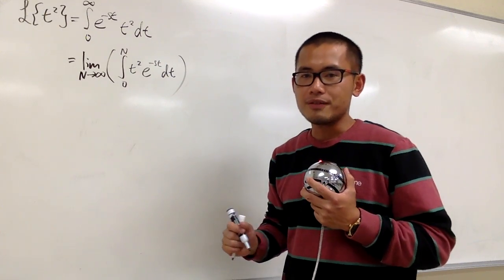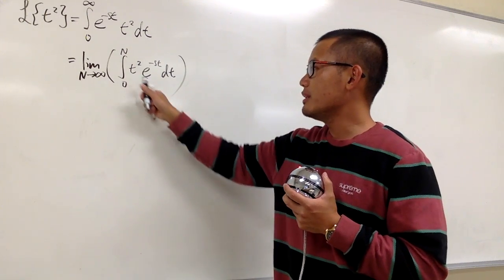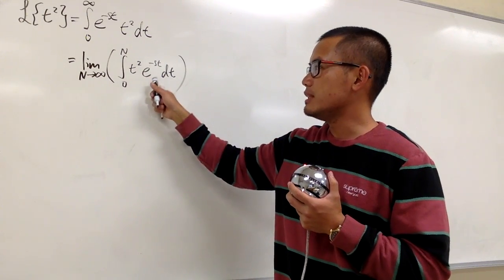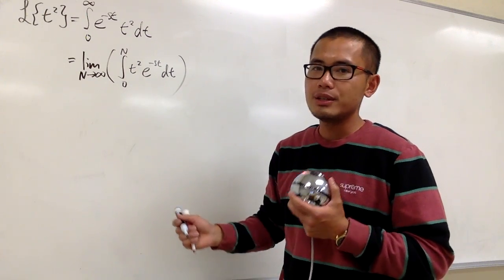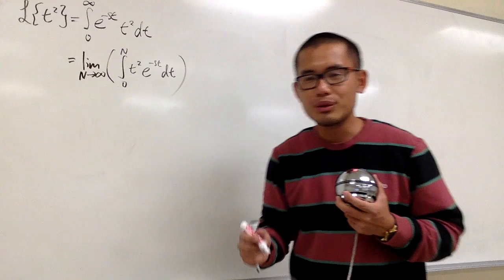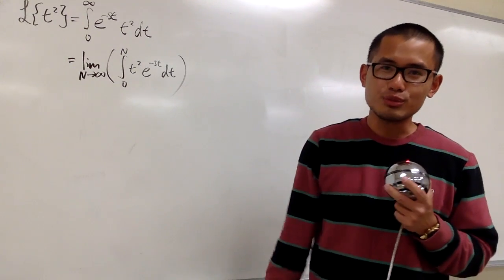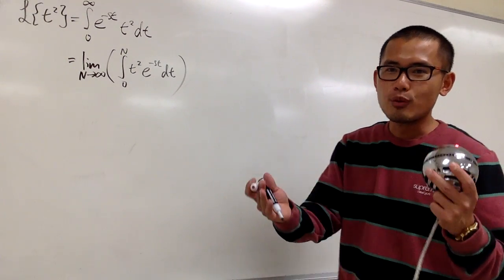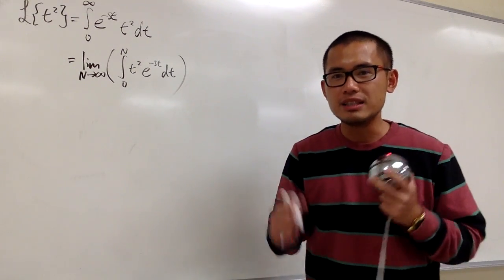We have to ask ourselves: how can we integrate t squared times e to the negative st? Well, we have to use integration by parts, and I'll show you with the DI method.